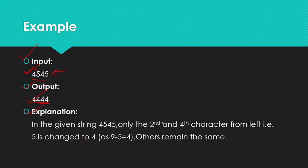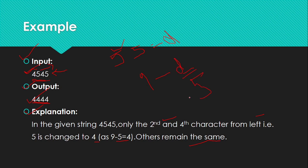In the given string 4545, only the second and fourth characters from the left — that is, 5 — are changed to 4, because 9 minus 5 equals 4, and others remain the same. So basically you have to find out the maximum number in this string. The maximum character is 5, which appears twice. Using 9 minus d where d is 5, you get 4.